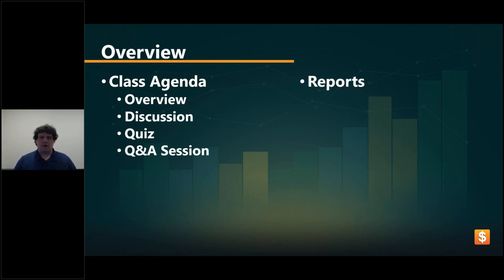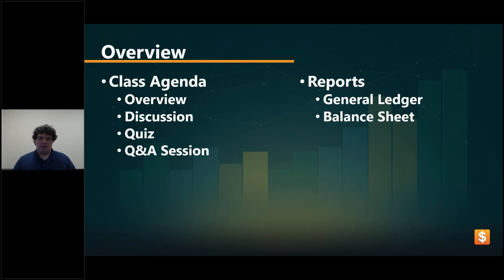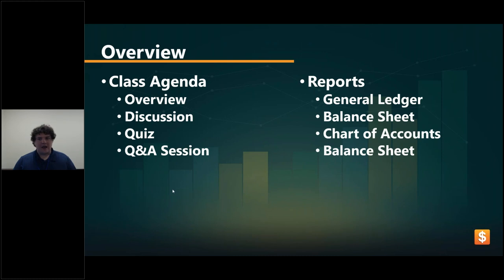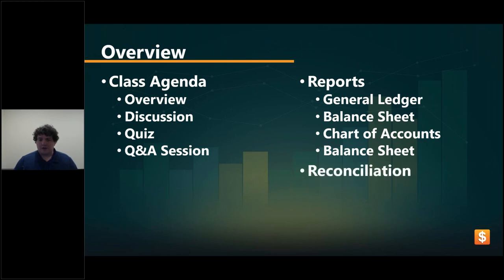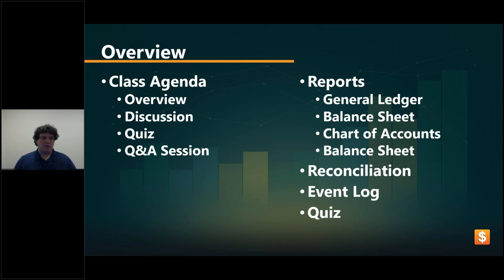So what are we going to be talking about today? We're going to start off with the general ledger report, then hop into the balance sheet, the statement of income and expense — I apologize, I had that listed incorrectly. We're also going to be talking about the bank account reconciliation report, a few other smaller reports, the event log, and then we'll get into our quiz and Q&A.